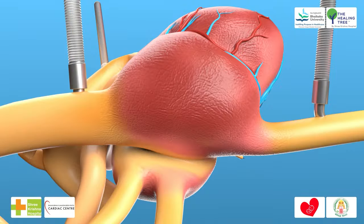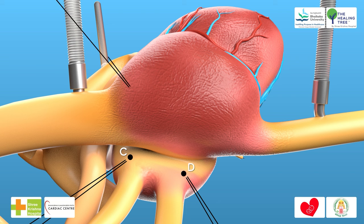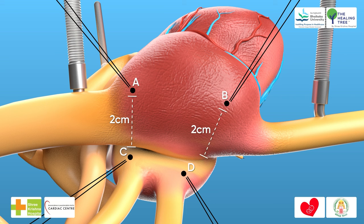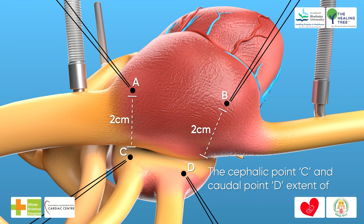Step 9: Placement of stay sutures. Step 10: The stay stitches are placed on the superior margin of the right upper pulmonary vein atrial junction and the inferior margin of the right lower pulmonary vein atrial junction (C to D). Step 11: The other two stitches are placed in front of the crista terminalis (A to B), approximately 2 cm anteriorly from the interatrial groove.